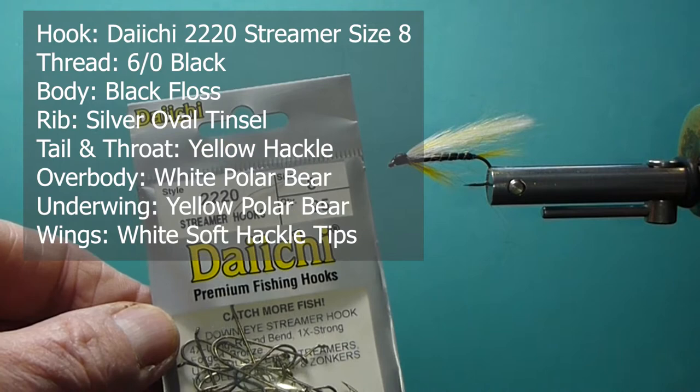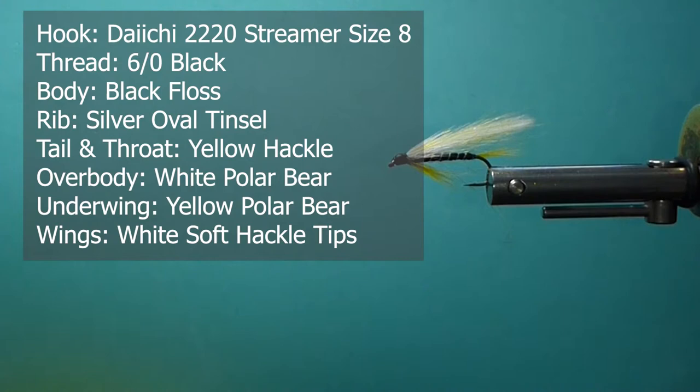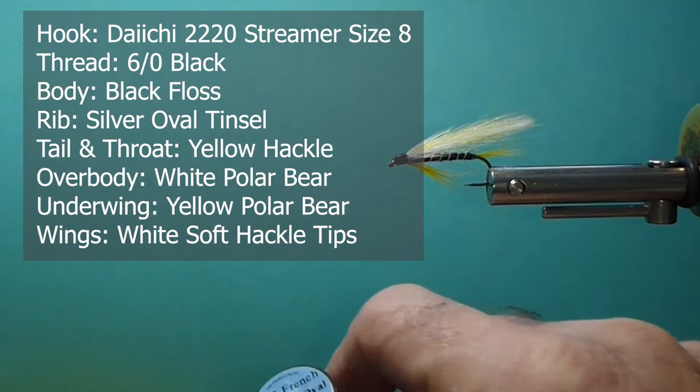I'm going to use some Daiichi 2220 streamer hooks, these are in size 8s. You can also tie this in size 10s as well. On the body I'm going to use some black Unifloss. The rib I'm going to use some Uniflent French Oval, small and silver.